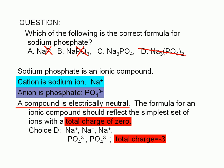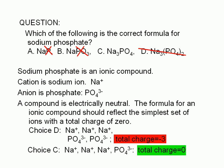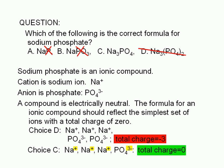If we look at choice C, we can see that the total charge is 0. The formula in choice C implies that there are 3 sodium ions for every phosphate ion. 3 times positive 1 gives us a total positive charge of plus 3. 1 times negative 3 gives us a total negative charge of negative 3. The overall charge is then 0, and the correct answer is C.